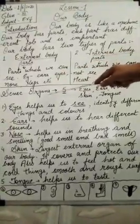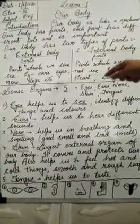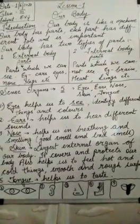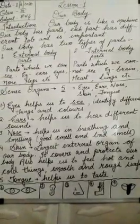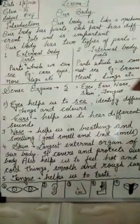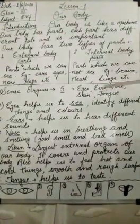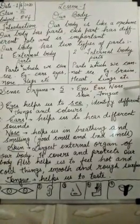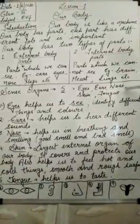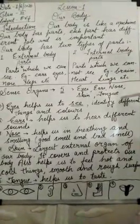Now, sense organs. There are total 5 sense organs in our body. Sense organs woh hote hain jo humein humare environment ko explore karne mein help karte hain — hum isse dekh sakte hain, sun sakte hain, feel kar sakte hain, taste kar sakte hain. You have to learn this — this is very important. There are 5 sense organs: eyes, ears, nose, skin, and tongue.